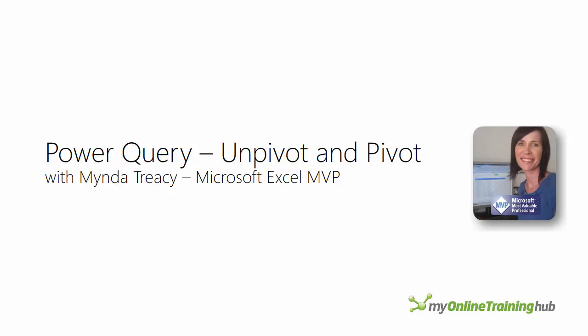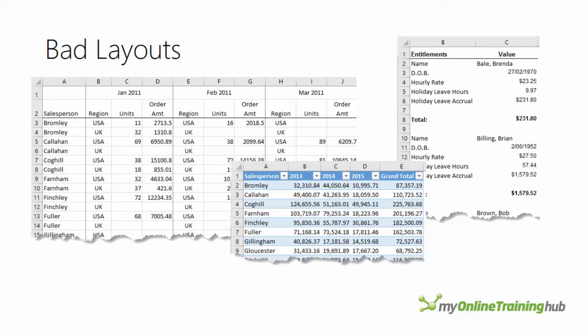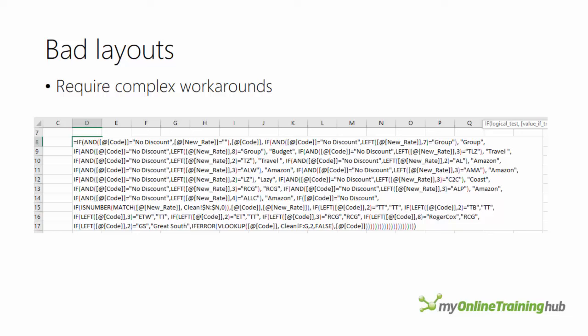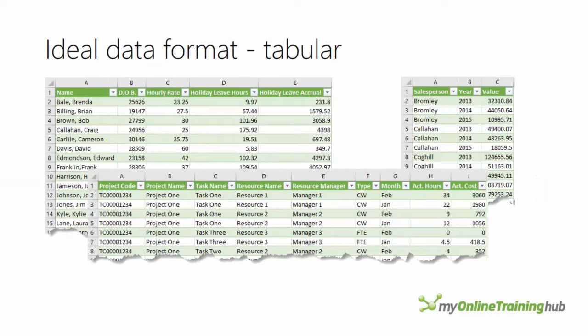Hi, I'm Minda Tracy from My Online Training Hub, and in this tutorial we're going to look at Power Query's UnPivot and Pivot Tools. One of the most common data layout problems we Excel users encounter is data that is already in a pivoted or partially pivoted layout. These formats are bad because we can't use pivot tables or formulas the way they were designed, and so we end up agonizing over ridiculously complicated formulas. But now that we've got Power Query, we don't have to put up with poorly laid out data anymore because it's really easy to fix. You'll be Power Query UnPivot masters by the end.